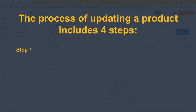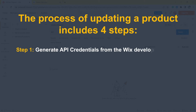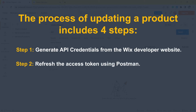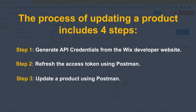Step 1: Generate API credentials from the Wix developer website. Step 2: Refresh the access token using Postman. Step 3: Update a product using Postman. Step 4: Verifying the result.